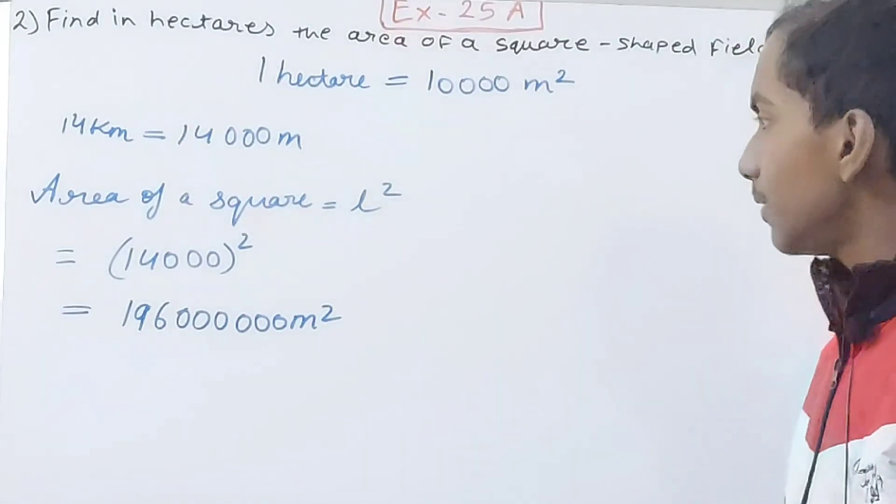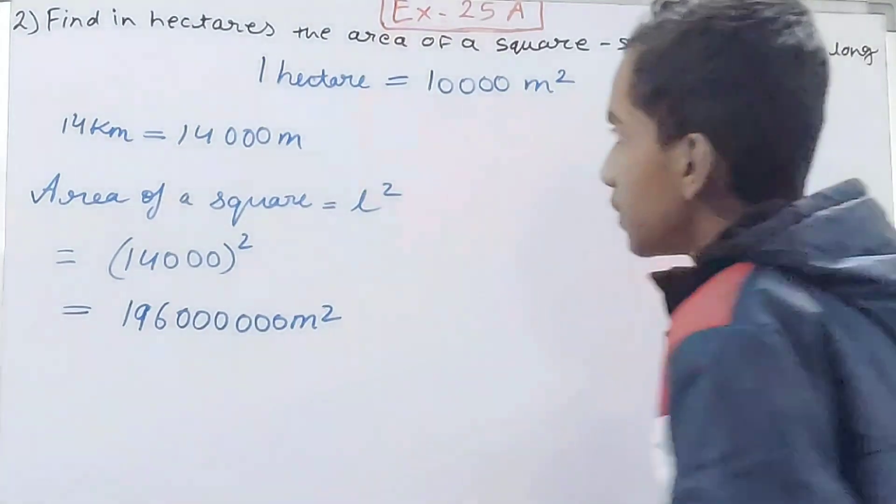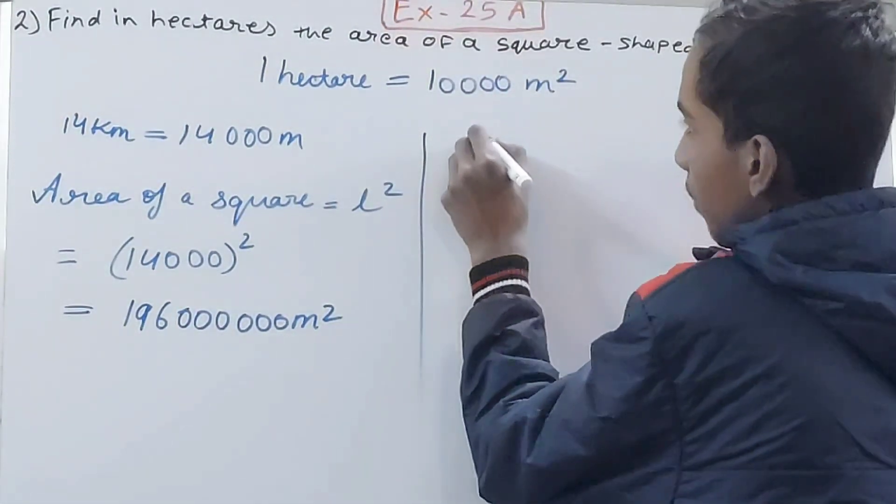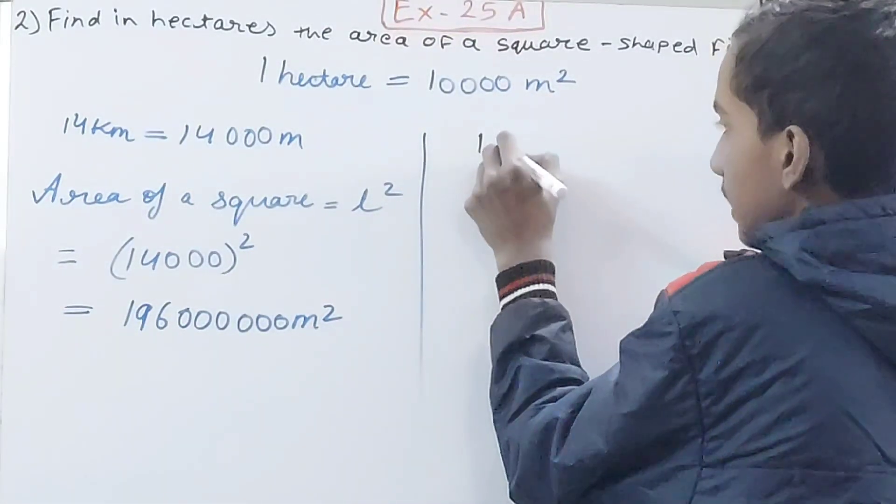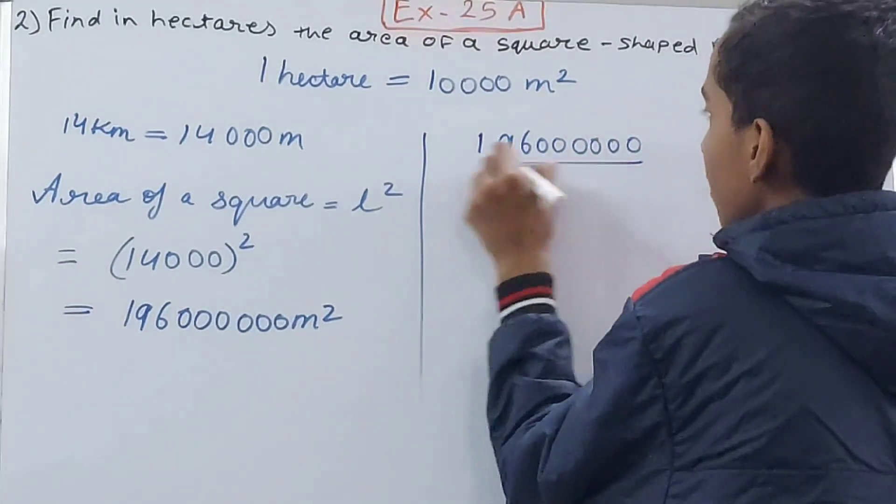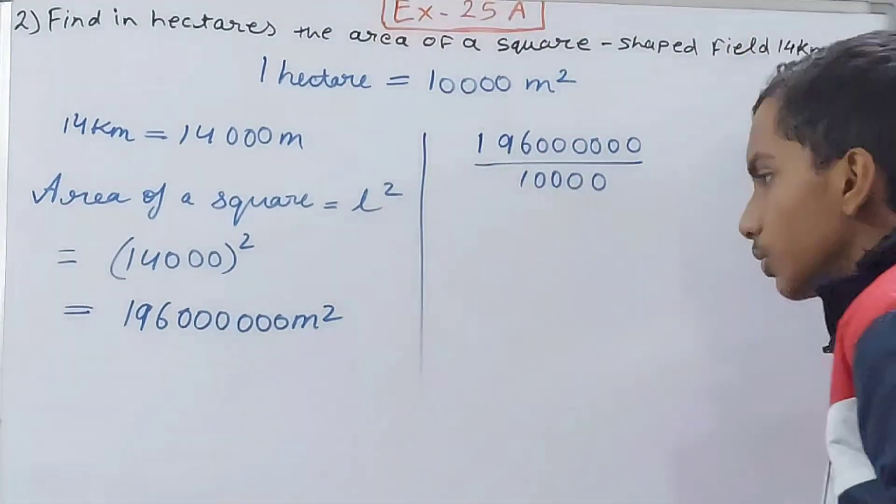This much is the area of the square field that we have: 196,000,000 square meters. Now see, we have this area and we want this in hectares. So what I will do is: one hectare we know is 10,000 meters. So in this 196 and six zeros, how many hectares will be there?